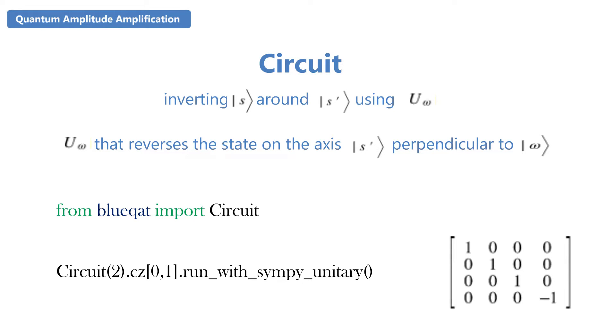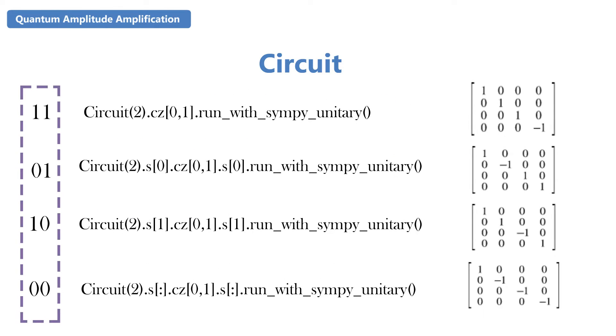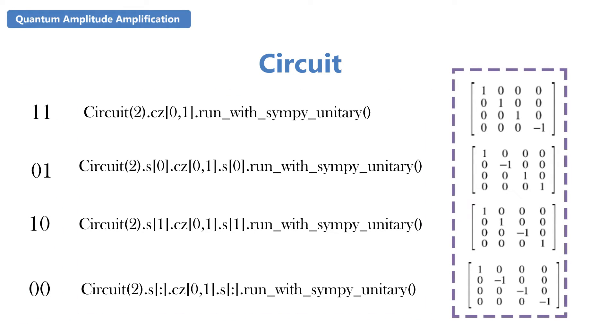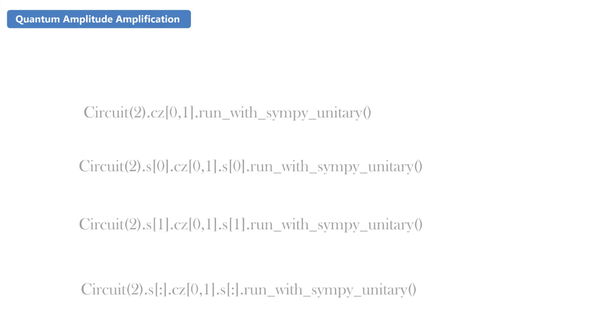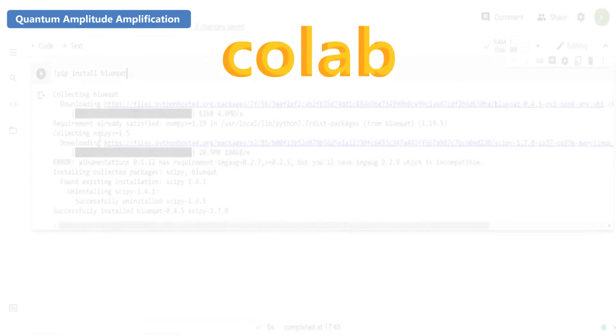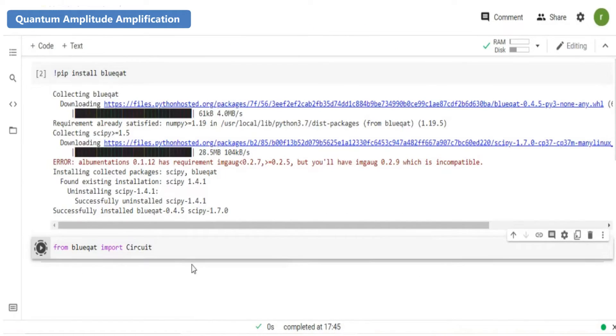Here we are doing two qubits quantum amplitude amplification on binary numbers zero zero, zero one, one zero, and one one. So these are the corresponding code and its outputs based on binary number. So now we will be implementing the above shown code in Google Colab. Firstly, let's import the circuit.